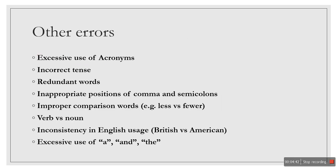The miscellaneous section covers other errors. These include excessive use of acronyms in papers, incorrect tense — in a proposal you may need future tense, but in a report you use past tense and sometimes present tense. Incorrect tense is also a common error. Similarly, use of redundant words is another error, and inappropriate positioning of commas and semicolons is also another error.